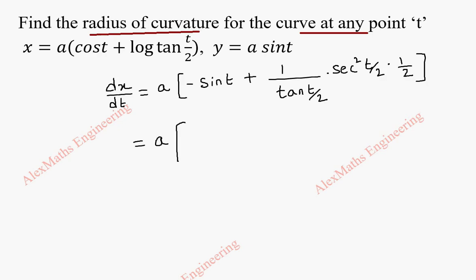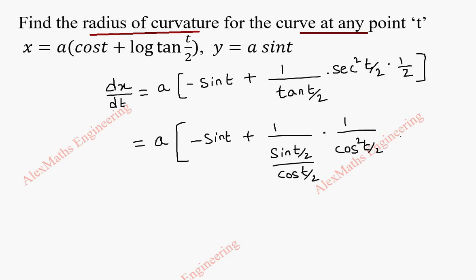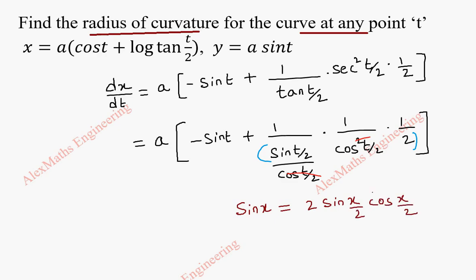Now we have to change everything in terms of sin and cos. The first term is written as it is. tan(t/2) can be written as sin(t/2)/cos(t/2), and secant square is 1/cos²(t/2), and we also have 1/2. We can cancel cos(t/2) with the square. So finally in the denominator we have 2·sin(t/2)·cos(t/2). Using the basic formula sin x = 2·sin(x/2)·cos(x/2), the denominator can be written as sin t.